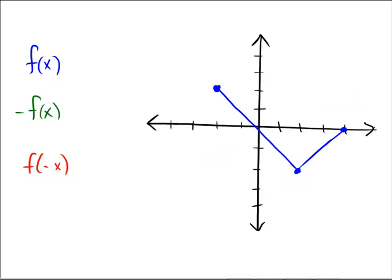Look at this picture. f of x again is blue. Green is going to be a reflection over the x axis, and red is going to be a reflection over the y axis. Pause the video and see if you can reflect over the x and y on your own.